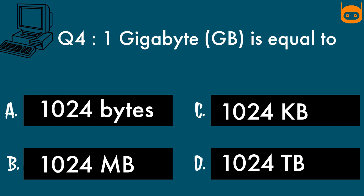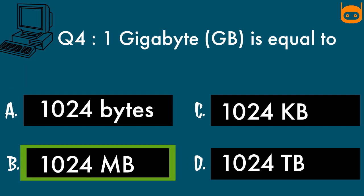The right answer is Option B: one gigabyte equals one thousand twenty four megabytes.